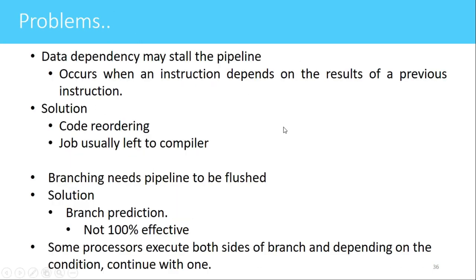There are some problems in pipelining. The first problem is data dependency — this occurs whenever an instruction depends on the result of the previous instruction. If the current instruction requires the output of a previous instruction that has not fully executed yet, the available output will be the old result rather than the current one, potentially giving an erroneous result. This problem can be solved by code reordering, which is usually left to the compiler, placing data-dependent instructions apart so the output of the first is available before the next is fetched.